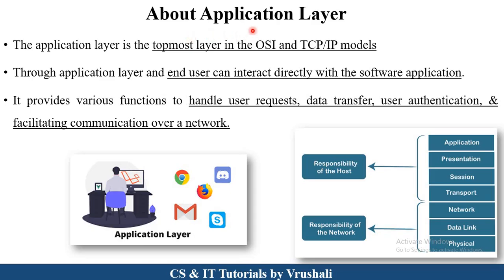The first point is what exactly is the application layer. We already discussed the OSI and TCP/IP model in a previous session. The application layer is the topmost layer in the OSI model. The user can directly interact with applications — social media applications, banking applications, different browsers, and gaming applications. This front-end interface is called the application layer. It handles user-requested data, supports user authentication with username and password, and provides communication between client and server.